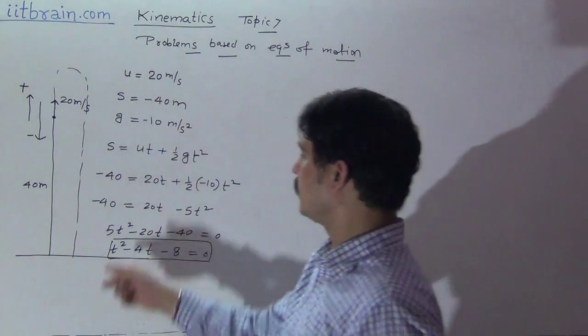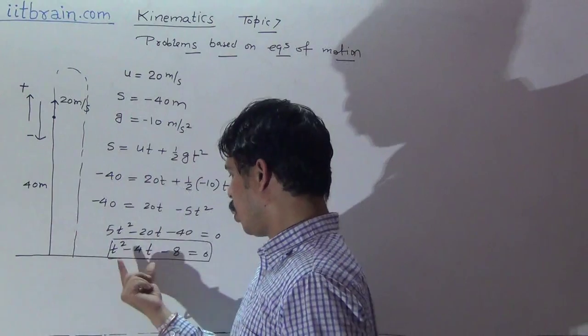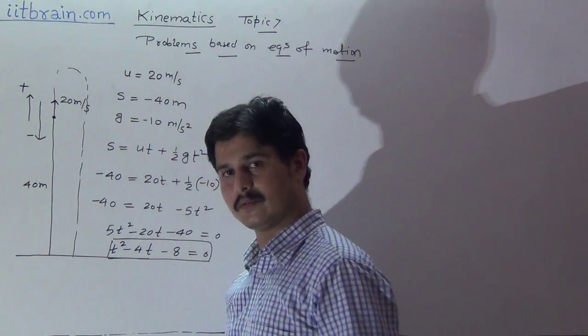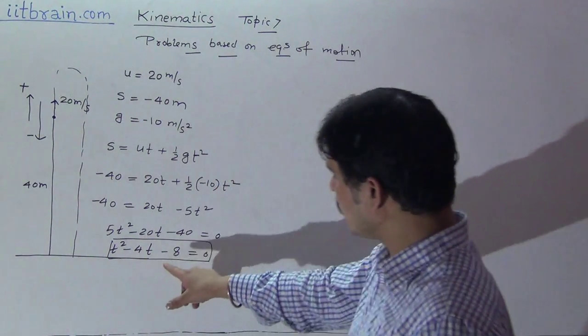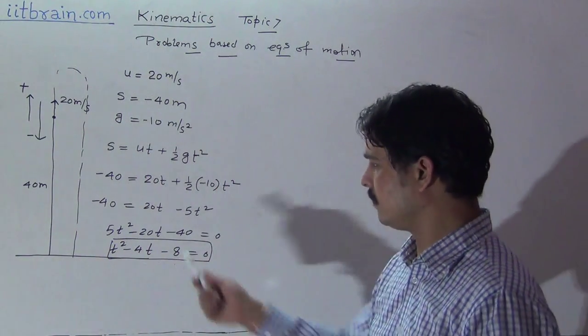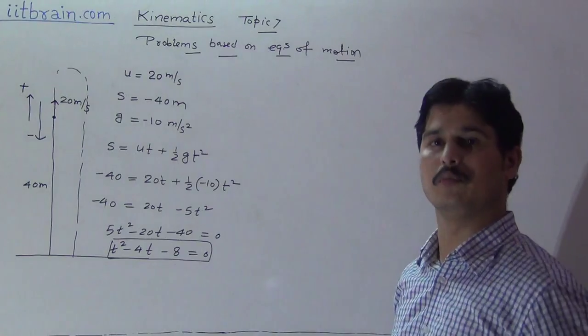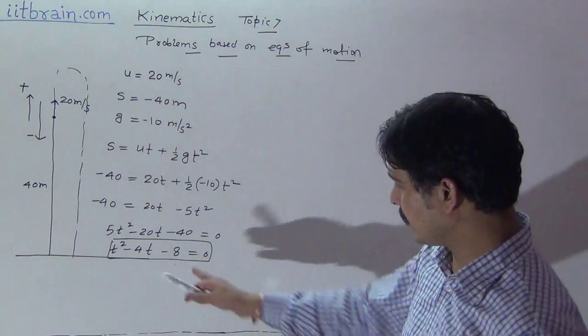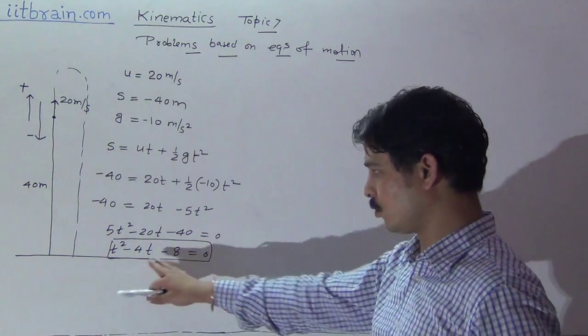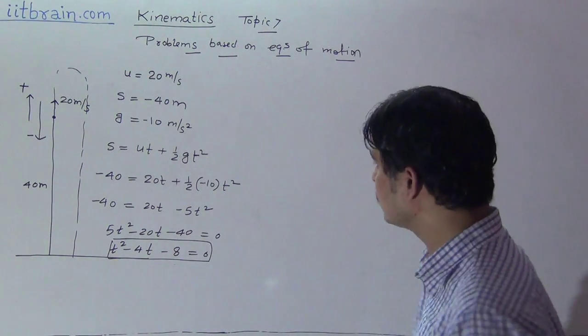Solve the quadratic equation to find the value of t. The positive solution of the quadratic equation will be the time of flight of the particle. The negative solution is rejected since time cannot be negative.